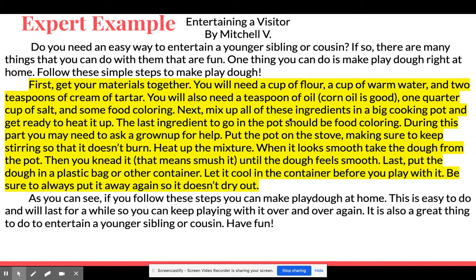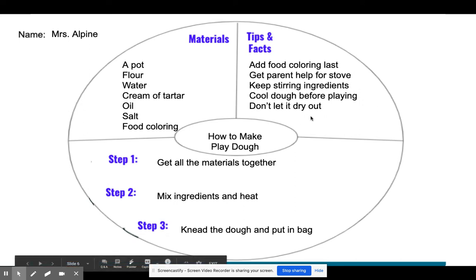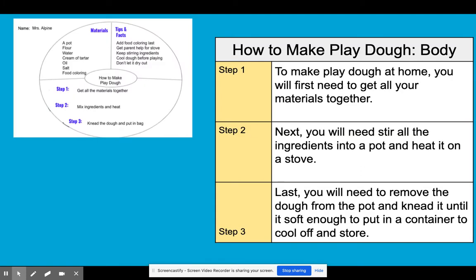We've seen our expert example, and everything in yellow is our body paragraph. But the author, Mitchell, did not start with this beautiful paragraph already done. First, he did a circle map. Then he said, I know I want to discuss how to make Play-Doh at home. He listed all the materials needed, jotted down the basic steps of how to make Play-Doh, included some fun tips and facts, and then put the steps into complete sentences.